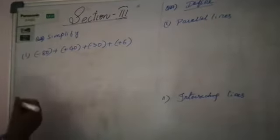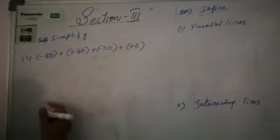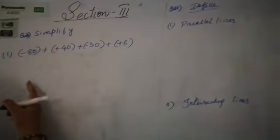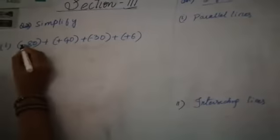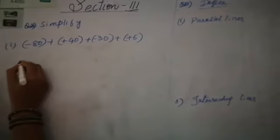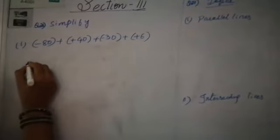See that. He is asking to simplify. It is a very simple question. It is from the integers. You have to remember children. First sign — you have to open the brackets and write along with the sign. Minus 80.